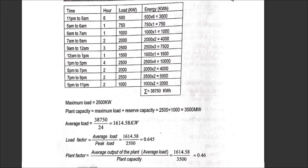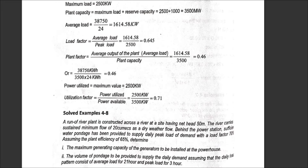So the total is in kilowatts. Now coming back to the plant capacity factor — with the big load and plant capacity, we get zero point six four five. The plant capacity factor is the average output of the plant divided by the plant capacity, which gives average load over plant capacity.